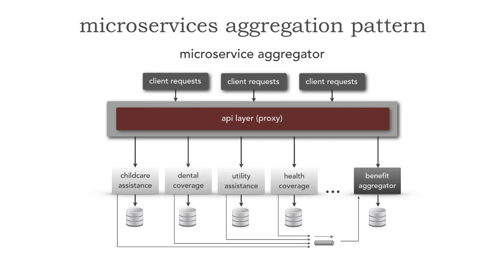These aggregators have another great use case, and that is for cross-cutting concerns as well. Let's say there's a new rule that says no individual can have more than 20 benefits. Well, if I go to child care to say: is Mark eligible for child care?